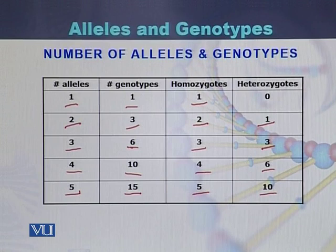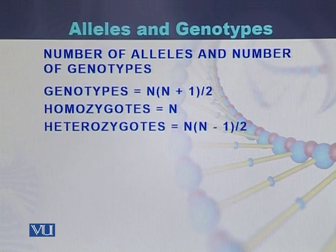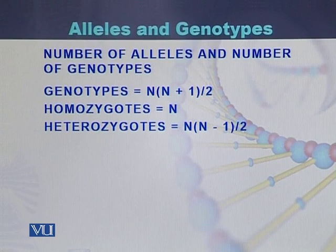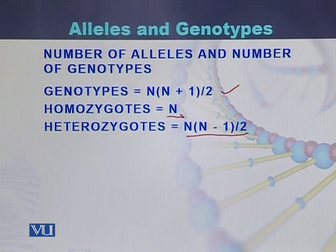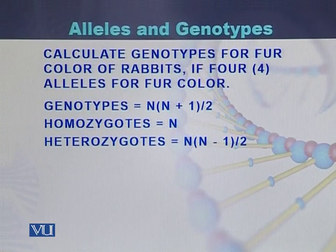So these different genotypes, based on the number of alleles, can be calculated using the formula. We can also calculate how many will be homozygous and how many will be heterozygous. The number of genotypes is calculated by n(n+1)/2, where n gives the number of homozygotes, and n(n-1)/2 gives the number of heterozygotes.